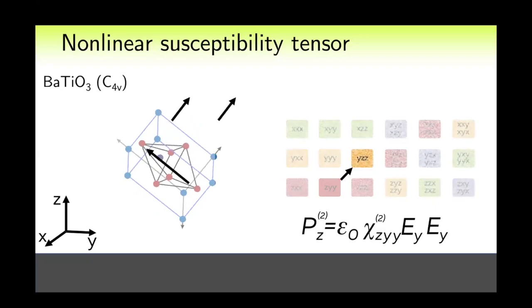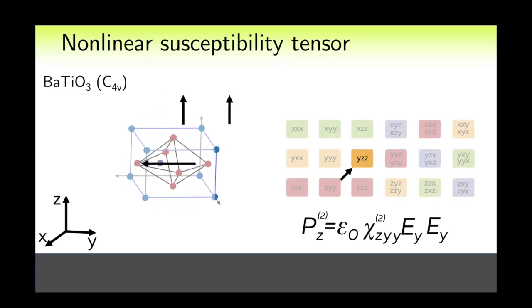And when this system is rotated, the same tensor component with the same value should now connect the field along the Z-axis with the polarization along Y, because from the point of view of the field along Z and polarization along Y the structure remains the same. Accordingly, the χ_zyy component transforms into χ_yzz when we rotate it around the X-axis by 90 degrees.